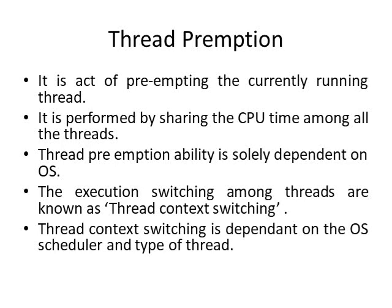The execution switching that happens amongst threads is known as thread context switching. Thread context switching depends on two things: one is the OS scheduler, and the other is the type of threads — depending on what type of thread it is, the OS scheduler uses context switching accordingly.